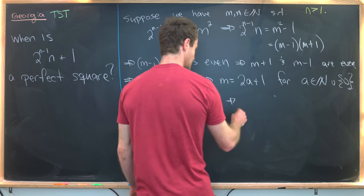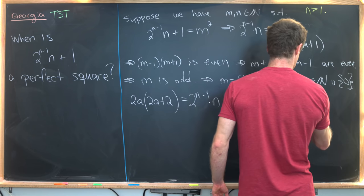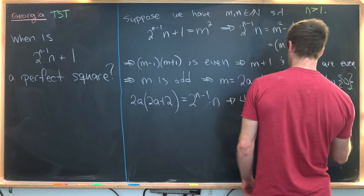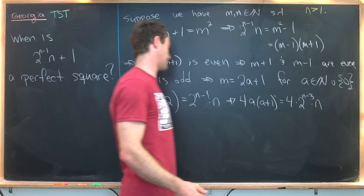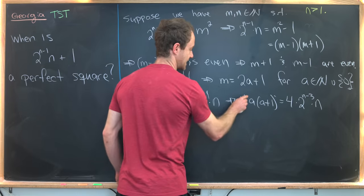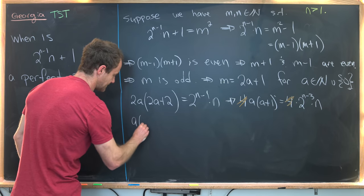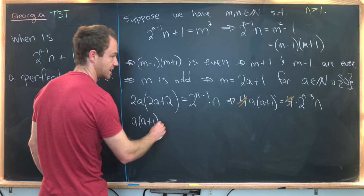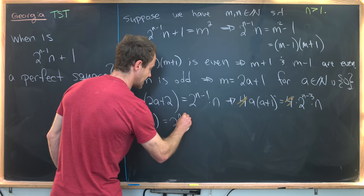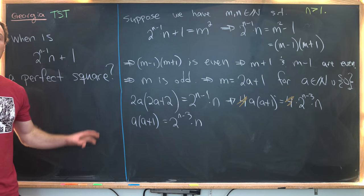Let's write that down. We've got 4 × a × (a+1) = 4 × 2^(n-3) × n. But that kind of obviously cancels. We can cancel this 4 with that 4, leaving us with a × (a+1) = 2^(n-3) × n.